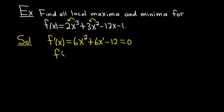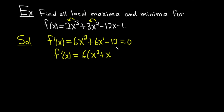We have f prime of x equal to 6x squared plus 6x minus 12, and we should be able to factor this. We can pull out a 6: so 6 times the quantity in parentheses. 6 times x gives 6x, and 6 times minus 2 gives minus 12. So we get 6 times (x minus 2), and this equals 0.